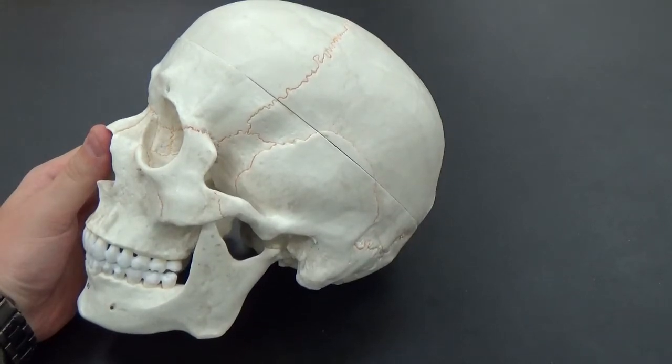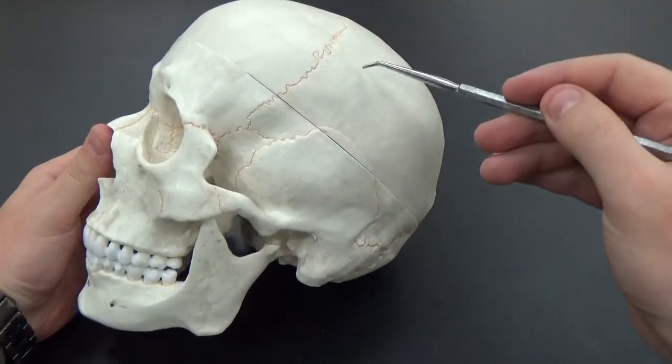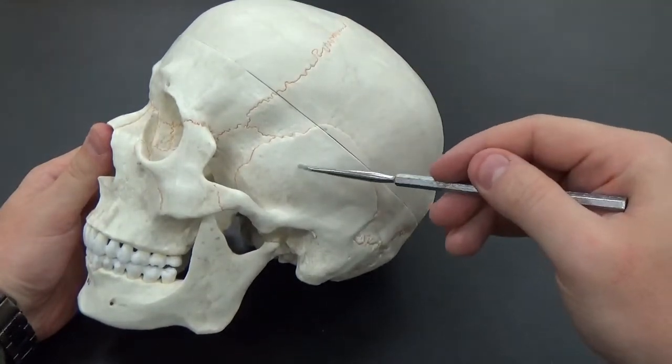Now looking at the side of the skull, again frontal bone up front here, parietal bone, temporal bone.